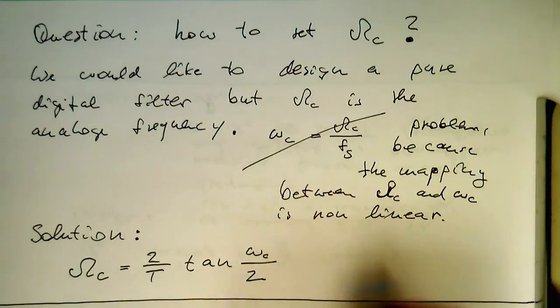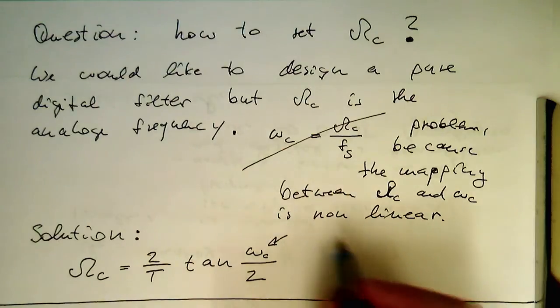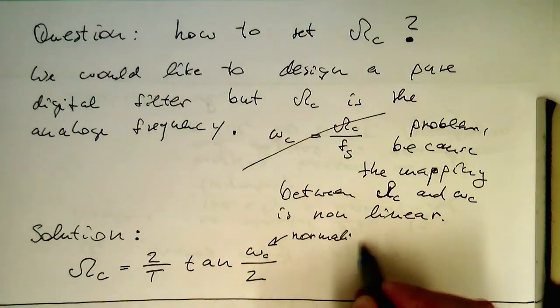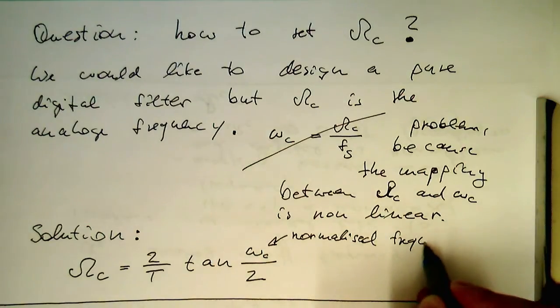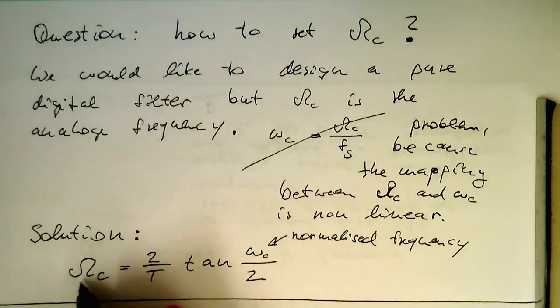So this was our mapping between the digital frequencies here. That's our normalized frequency. And this was here our analog frequency.